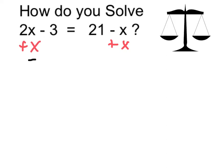On the left, 2x plus x gives me a total of 3x, so I'm left with 3x minus 3 equals just 21, because the x on the other side is canceled.